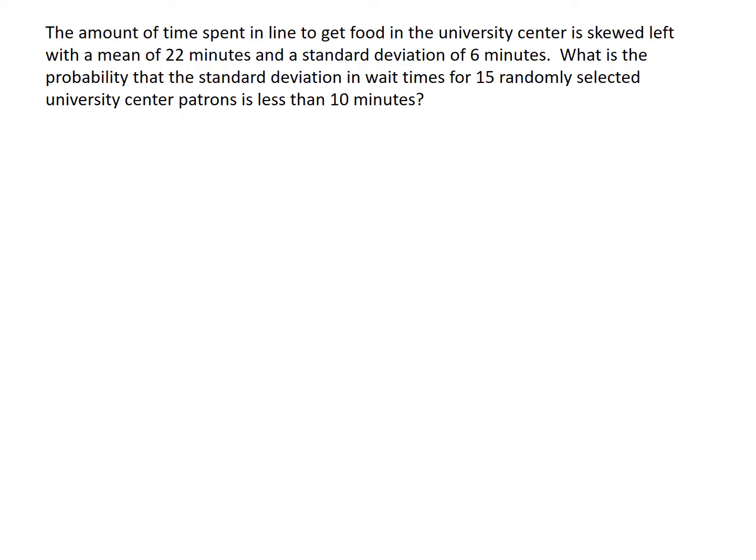We're going back to the UC food line. The time you wait in line is skewed left with a mean of 22 minutes and a standard deviation of 6 minutes. We're asked: what is the probability that the standard deviation in wait times for 15 randomly selected patrons is less than 10 minutes? The variable we're interested in is the standard deviation — it's either sigma or s depending on whether it's for a population or a sample. Since we're looking at 15 randomly selected patrons, those wait times are a sample, so this is the probability that s is less than 10.